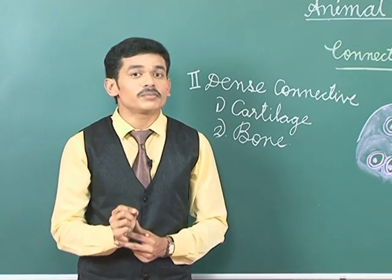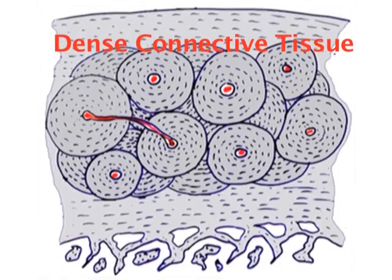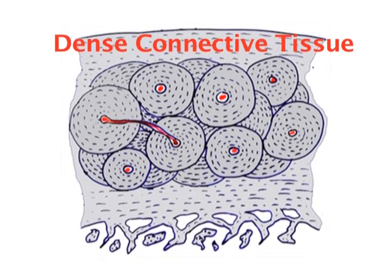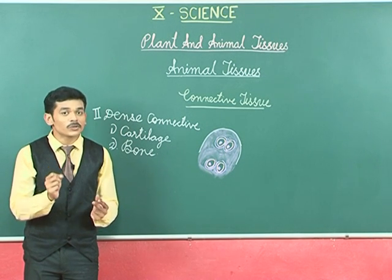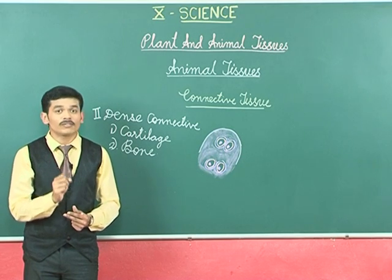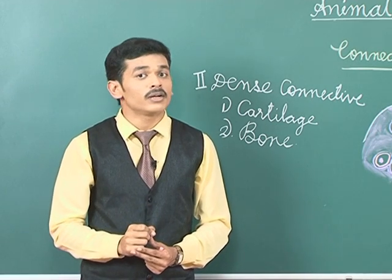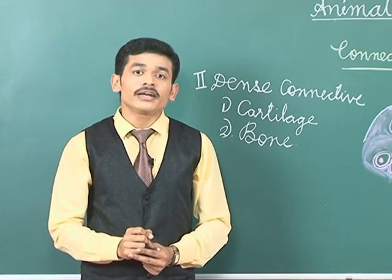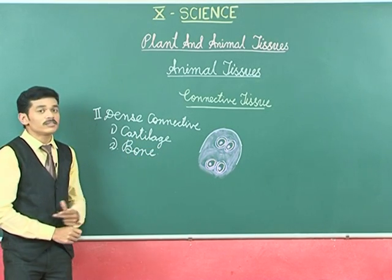Now let us learn about the second type of connective tissue, that is dense connective tissue. This name arises because of the density of the matrix — the matrix is hard. There are two types of dense connective tissue: first, the cartilage, and second, the bone.